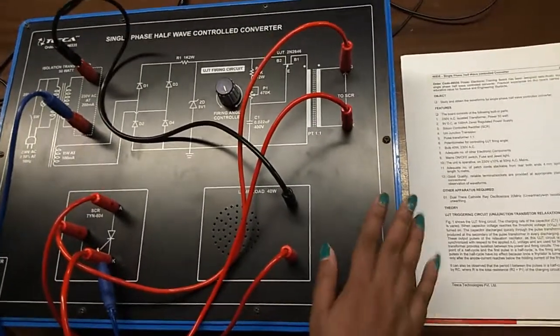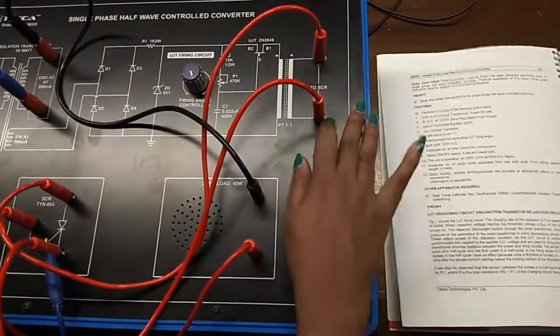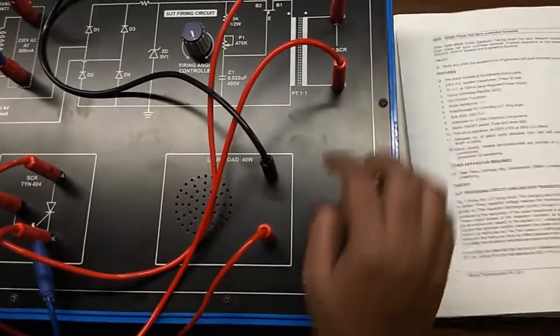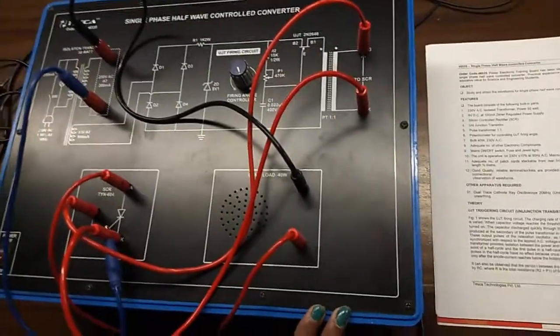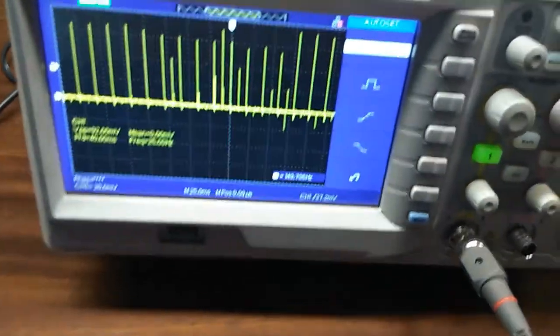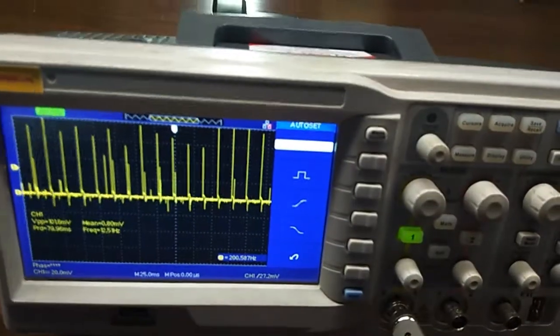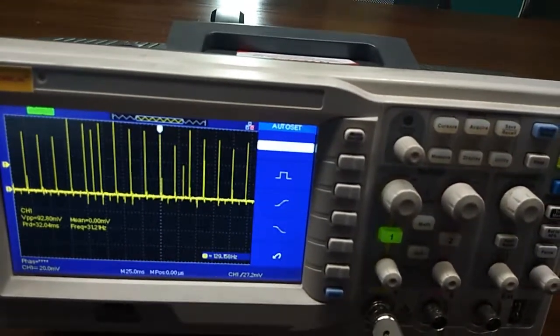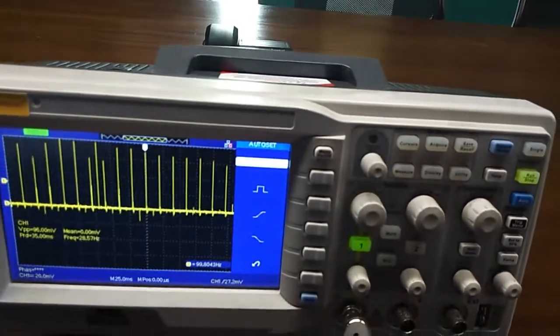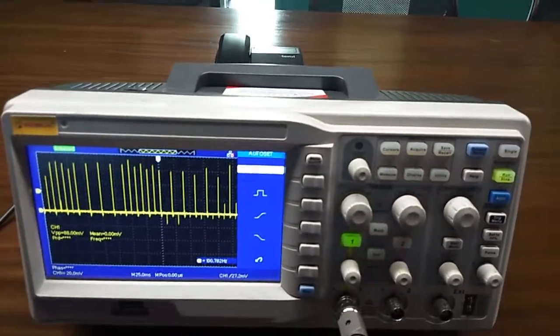We will observe the waveform, the pulse triggering waveform at this G and K terminal. Connect your CRO between this terminal and we will observe the waveform on CRO. Observe the UJT firing pulses by varying the potentiometer marked as firing angle controller across the secondary winding of pulse transformer.